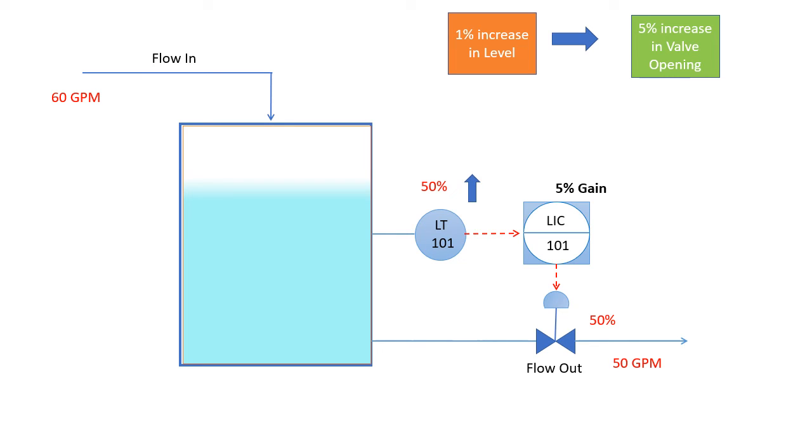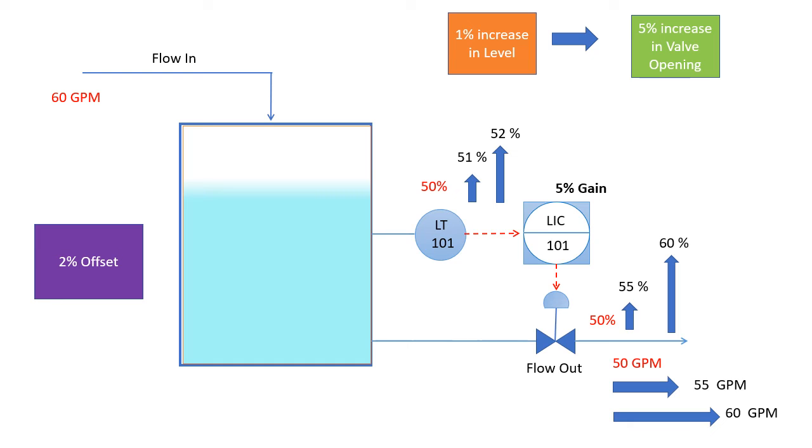So if the level rises to 51 percent, the valve opening will increase to 55 percent leading flow to 55 GPM. If level further raises to 52 percent, the valve opening goes to 60 GPM. At this moment, inlet flow equals outlet flow, so there is no further change in level. Now level is stuck at 52 percent. So in this case, we have an offset of 2 percent.